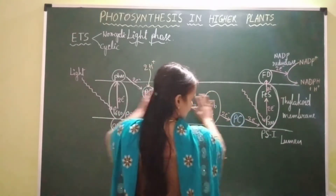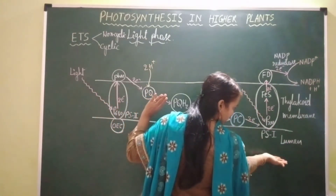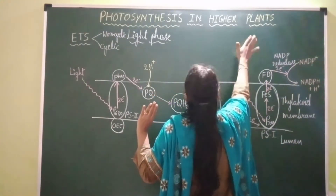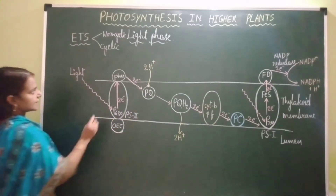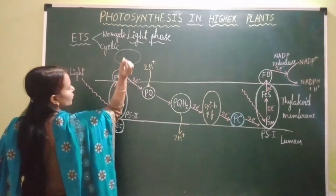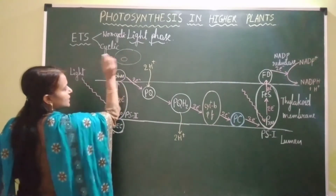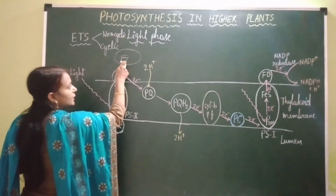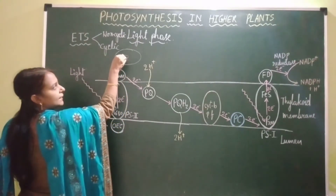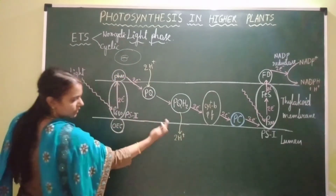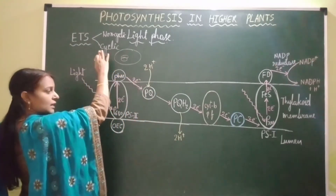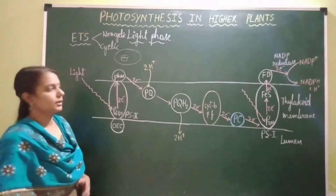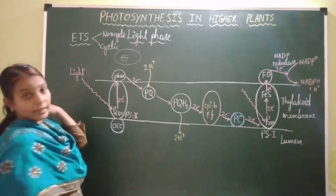This is the thylakoid membrane. The space occupied inside the thylakoid membrane is called lumen, and the space present outside the thylakoid membrane is called stroma — that is the matrix of the chloroplast. Inside the chloroplast, thylakoid membranes are present and stacked one above the other to form grana.